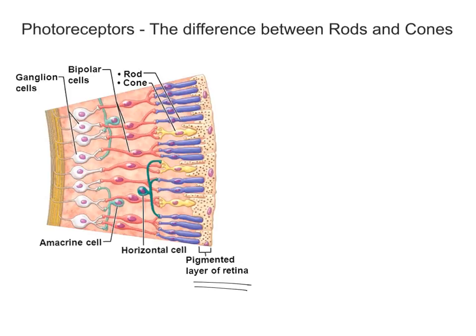If we just take the word itself — 'photo' refers to light, and the 'receptor' part refers to receiving information. So these cells, these rod cells and cone cells, are going to be detecting light. Light is going to be our stimulus.